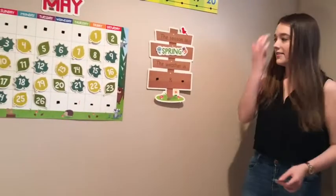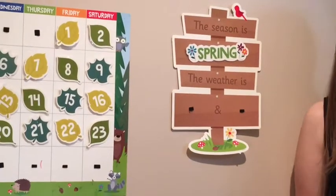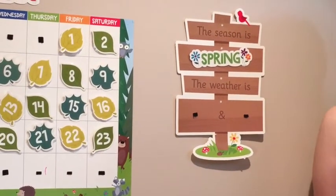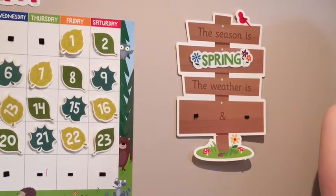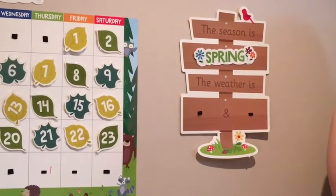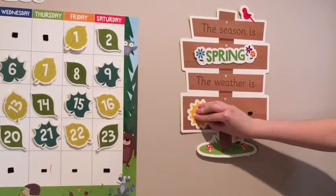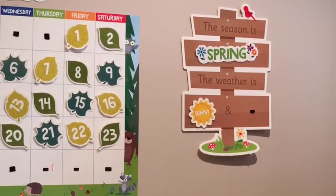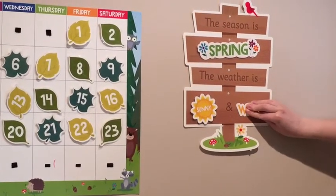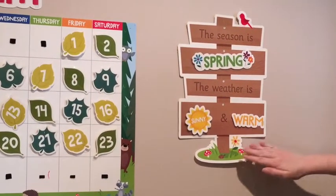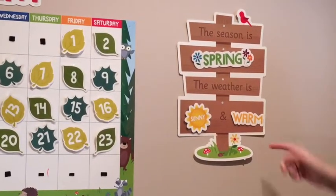And now that we've talked about our seasons, I want you to go and look outside your window. What does the weather look like today? Is it sunny? Is it cloudy? Is it raining? Well, Missy is looking outside her window, and right now it's looking pretty sunny. There's some clouds, but I see a little bit of sun. And also, it's warm out. It's actually very warm. So right now, the weather is sunny and warm.